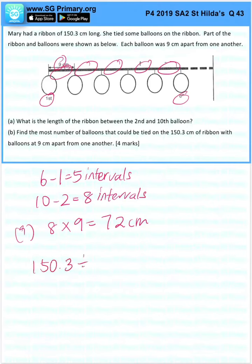150.3 divided by 9 gives us 16.7 sets of 9. This means there can only be 16 intervals. With 16 intervals, there will be 17 balloons.